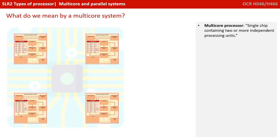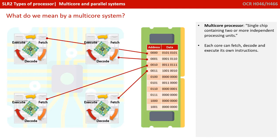A multi-core processor is essentially a single physical chip that contains two or more independent processing units, or cores. Each core can fetch, decode, and execute its own set of instructions.